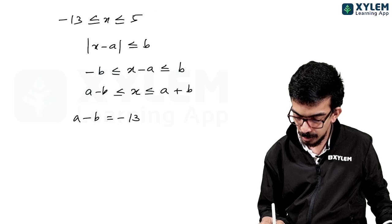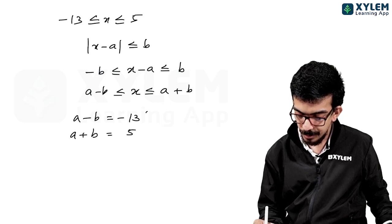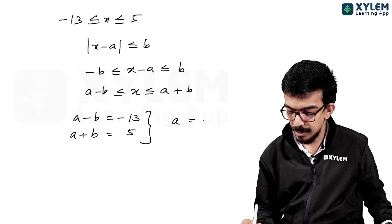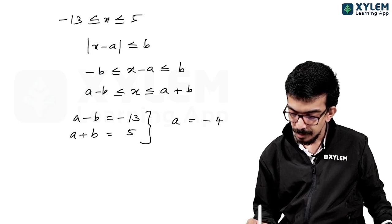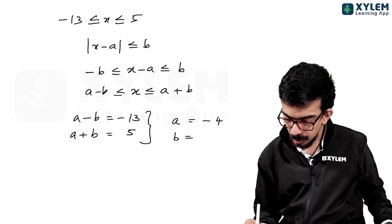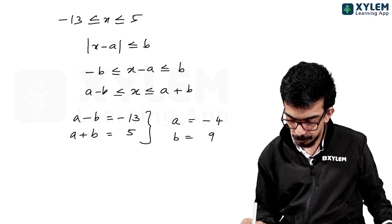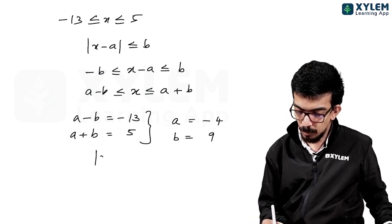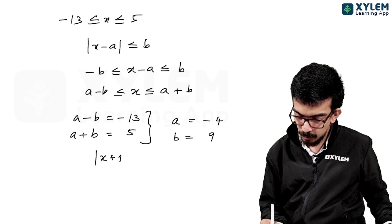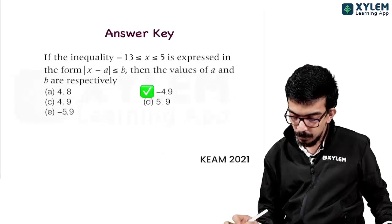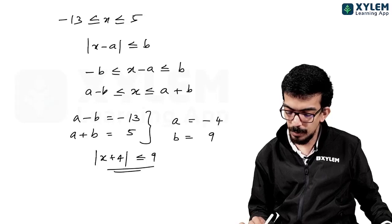Comparing: a + b = 5 and a - b = -13. Adding these: 2a = -8, so a = -4. Then b = 9. Therefore the inequality is modulus of (x + 4) ≤ 9, confirming a = -4 and b = 9.